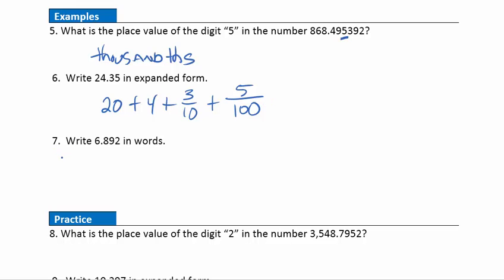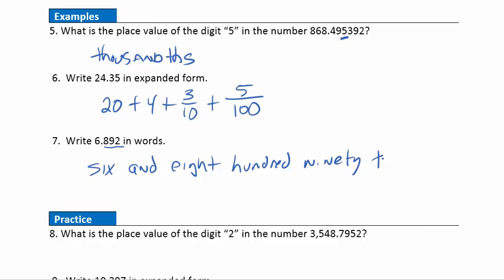Question seven: write this number in words. We start with six as the whole number part. Anytime we see a decimal, we use the word AND as our separator to indicate where the decimal point is. When I go to read the decimal side, I write out the value of that whole thing — that's eight hundred ninety-two. I write the place value of that last digit, which is in the thousandths place. So we would say six and eight hundred ninety-two thousandths.